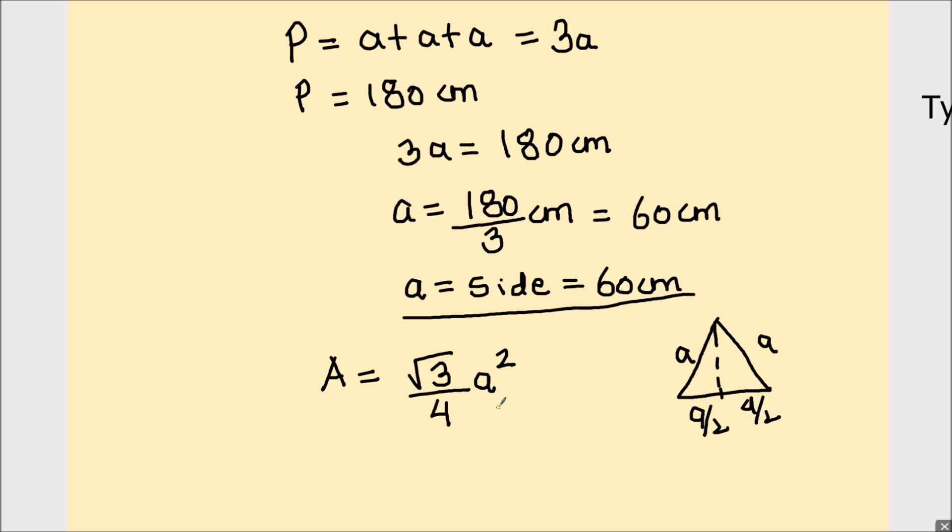You can find the area of the equilateral triangle using Pythagorean theorem where we have hypotenuse equal to a. The base will be a by 2 which is half of one of the sides of the equilateral triangle and we need to find the height of the triangle to find the area, and the formula for finding the area of the triangle is half base times height.